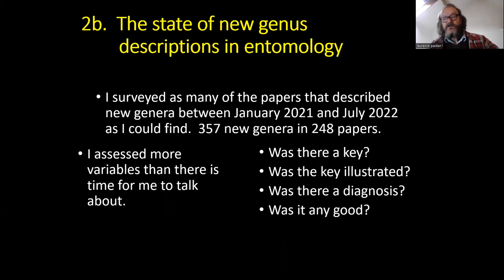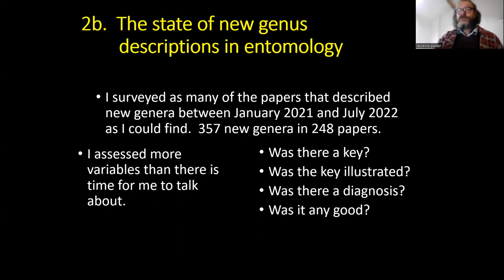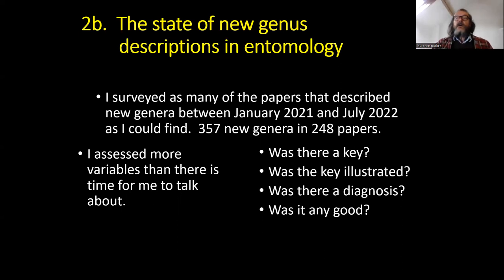Changing tack now: I looked at new genera described in 248 research papers over an 18-month period, describing 357 new genera. Why did I do this? I looked at some recent new taxa descriptions in bees and found that the quality of the information provided was incredibly variable, even by the same author. I looked at genera of all insects because I didn't want to offend all my meltological colleagues — I'd like to have some friends in the community and I didn't want to alienate everybody.